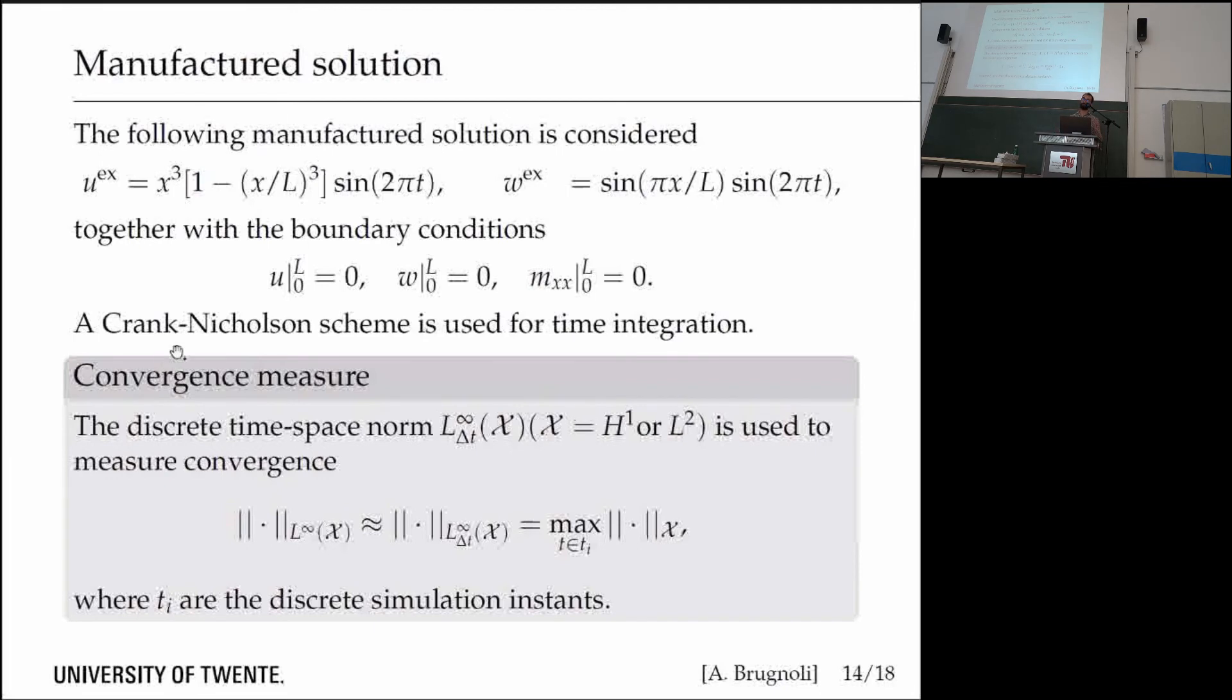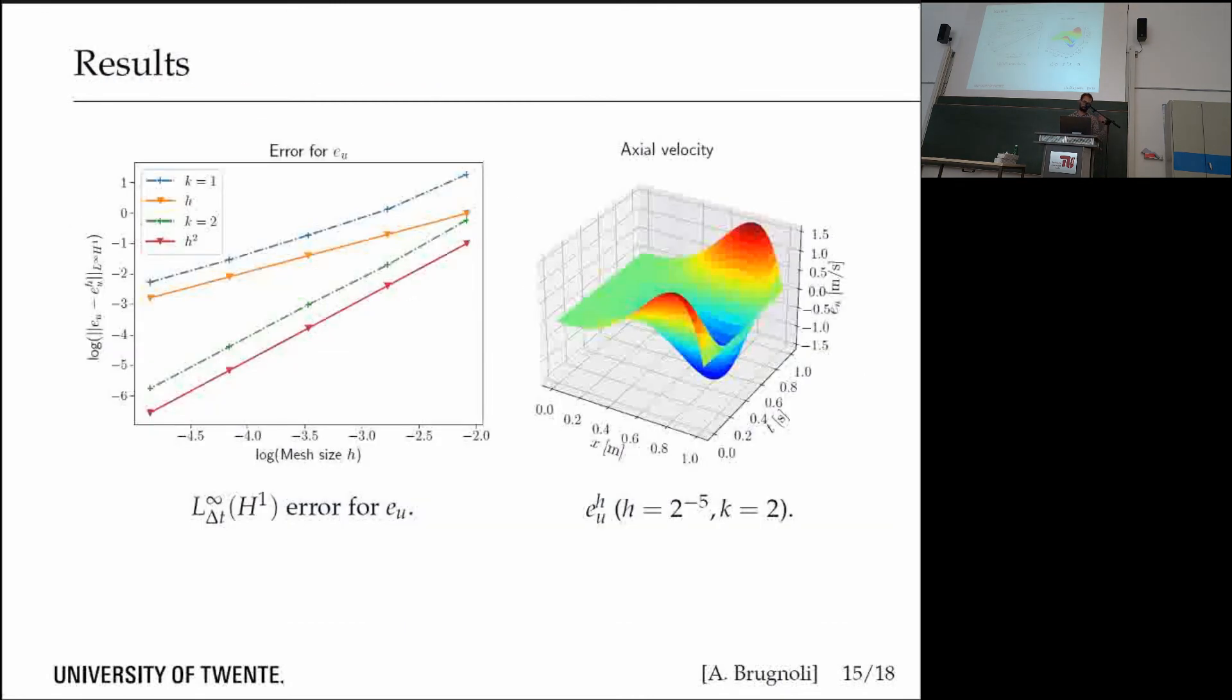I want to measure the convergence by considering this discrete time-space norm where I consider the L-infinity norm in the time domain over a certain Hilbert space, can be H1 or L2 depending on the variable I'm considering. To compute this in discrete fashion, I take the maximum value of a certain Hilbert norm on the simulation instances.